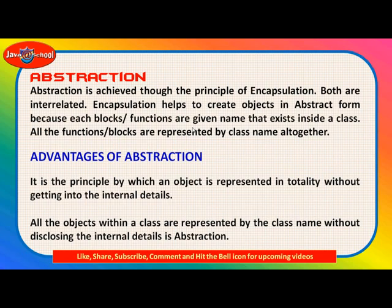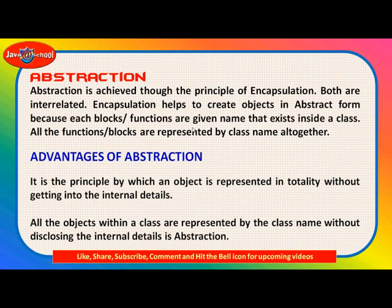Abstraction is the principle by which an object is represented in totality without getting into internal details. We cannot see how the function is working, what formula it is using to calculate — all these things are hidden. All objects within a class are represented only by the class name without disclosing their internal details and techniques. That is called abstraction.